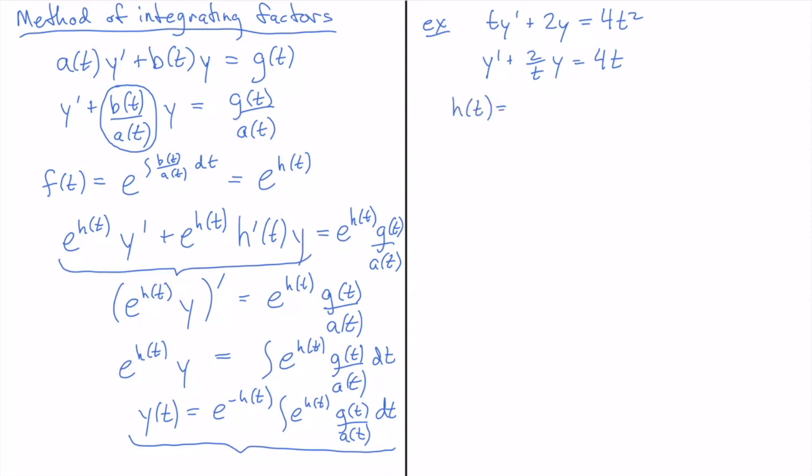H of t is going to be the antiderivative of 2 over t. Which is 2 natural log of absolute value of t.